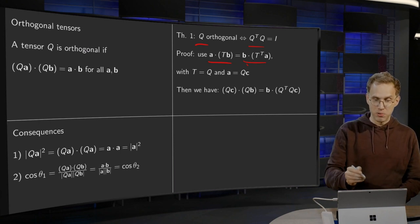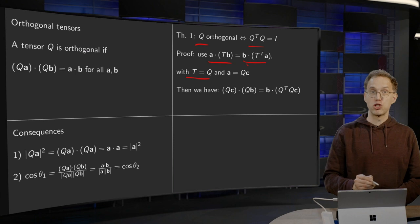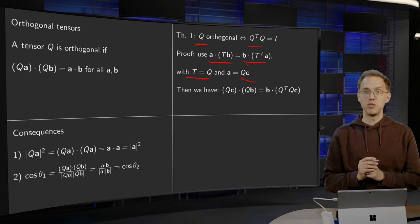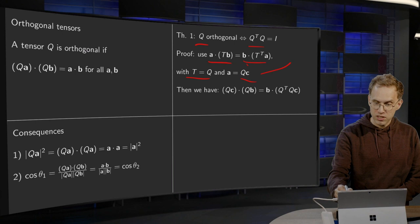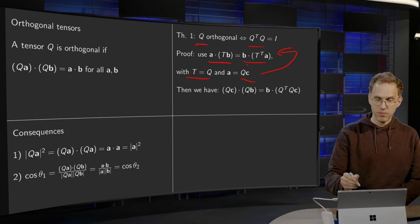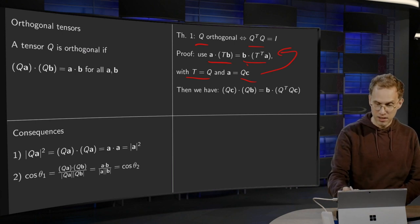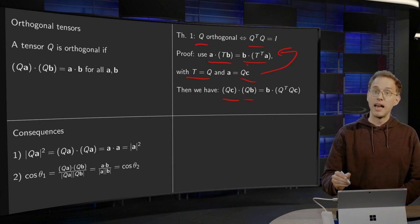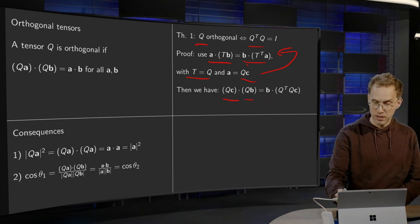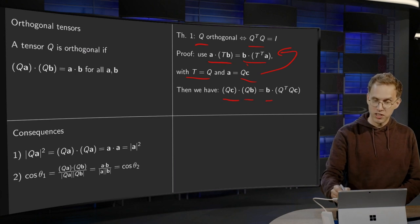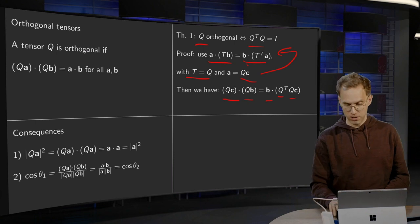Then we put T = Q, and choose the vector a to be Qc. Plugging this into the formula, we get on the left-hand side (Qc)·(Qb), and on the right-hand side b·(Q^T Qc).